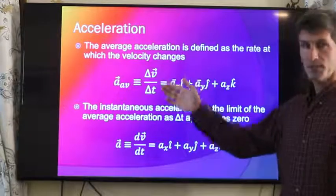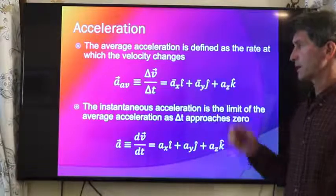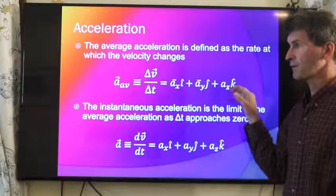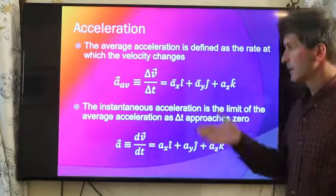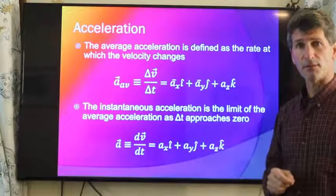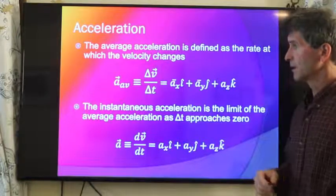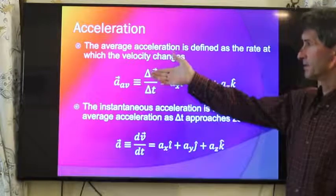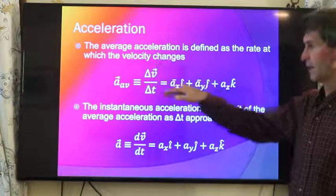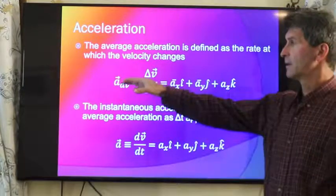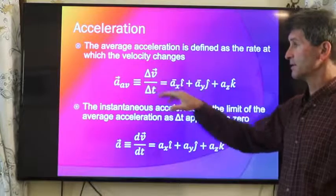With the velocity vector, we broke it into an x, y, and z component. Here's your average acceleration. It looks almost the same as the average velocity, except with the average velocity, it was displacement divided by change in time. Here, acceleration is a change in velocity as a function of time.